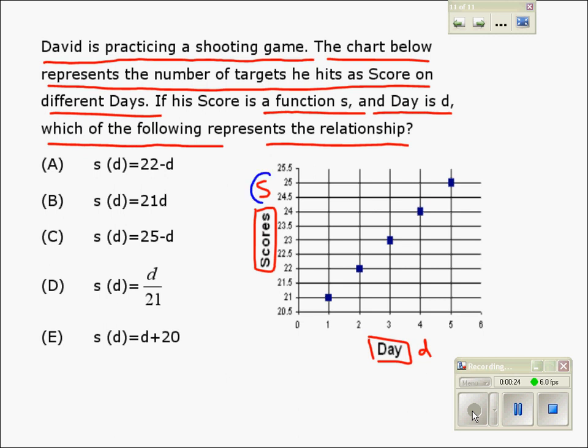How is S related with D? Here we have day 1, for which the score is 21. For day 2, the score is 22. For day 3, the score is 23, and so on.